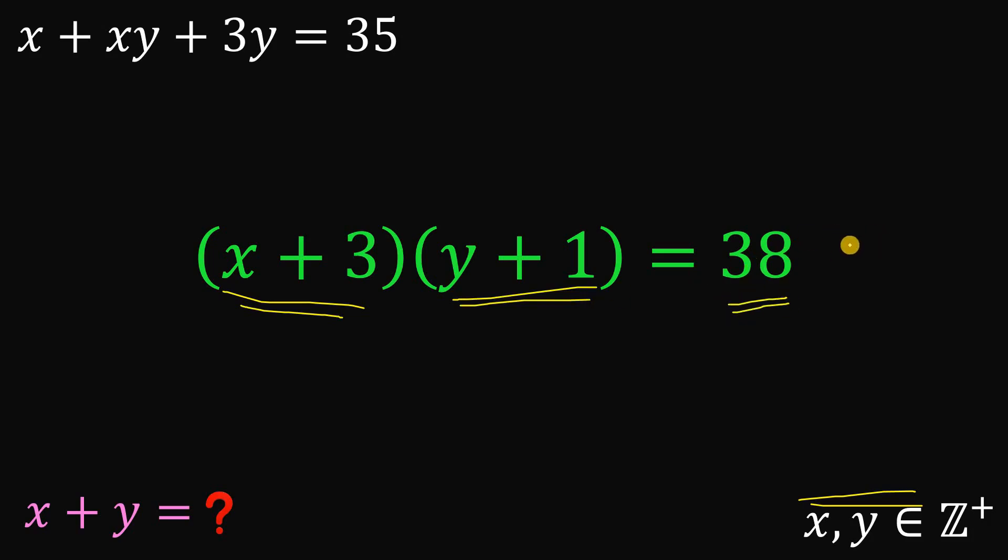And we have a few factors of 38. We have 2 times 19, 19 times 2, 1 times 38, and the last one is 38 times 1.